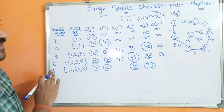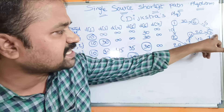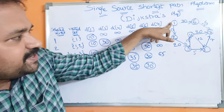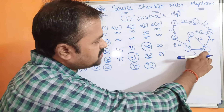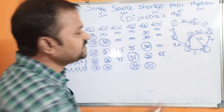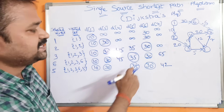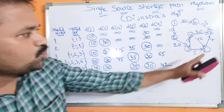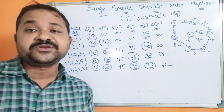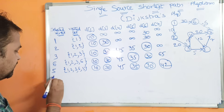Now we have to explore vertex 5. The adjacent vertex of 5 is only vertex 7. From 5 to 7, the cost is 7. We need to find the shortest distance from 1 to 7. The cost of 5 is already calculated as 35. So 35 + 7 = 42. In place of 65, we write 42, because the new path via vertex 5 gives a shorter distance of 42. So the next selected vertex is 7, with cost 42.